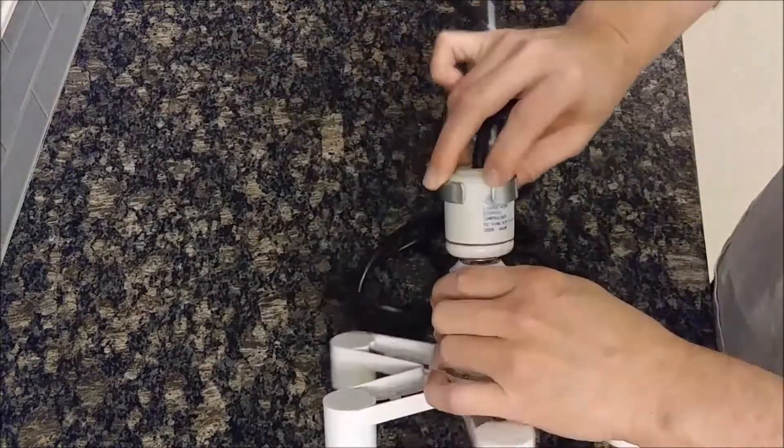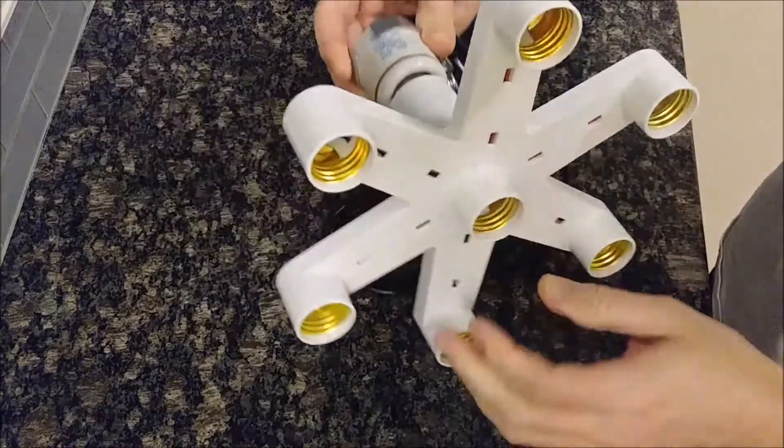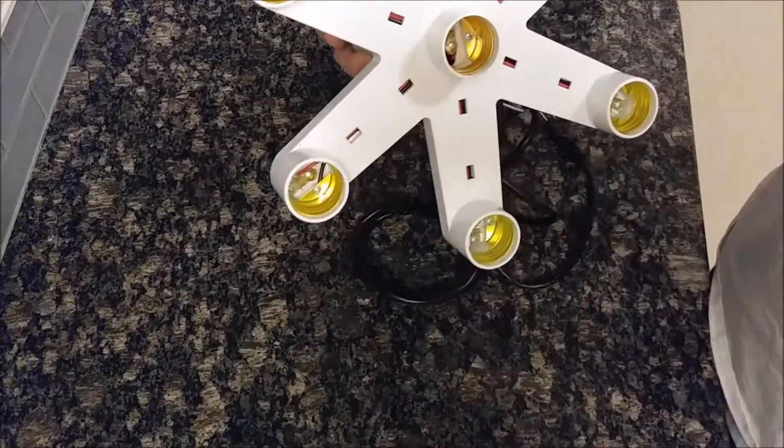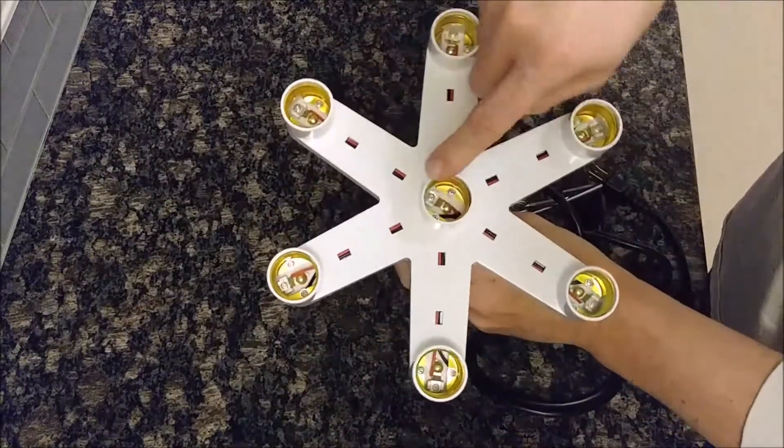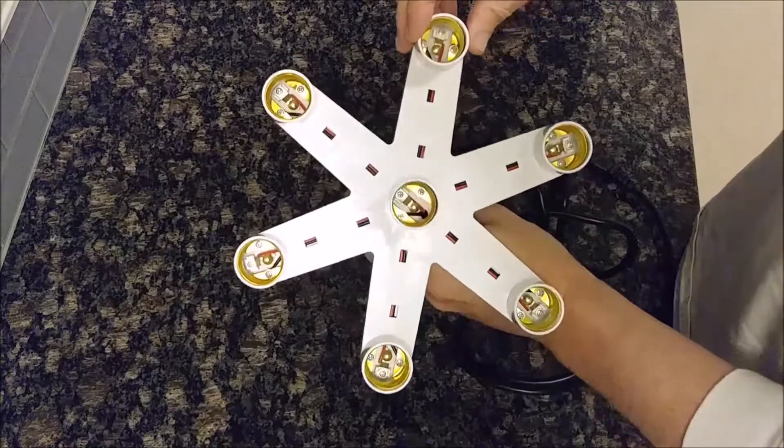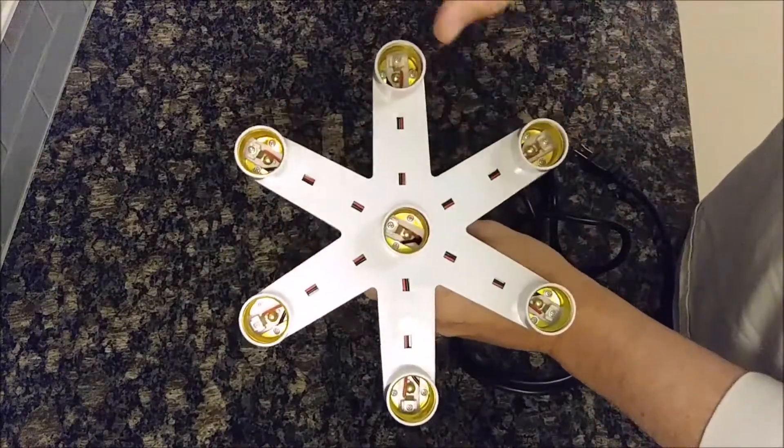What you do is you just plug this in here like this, screw it in there like that, go ahead and plug your plug in, and all these sockets are hot and they'll light up. So you can put seven bulbs in here if you need to. You got one, two, three, four, five, six, and one in the middle is seven.